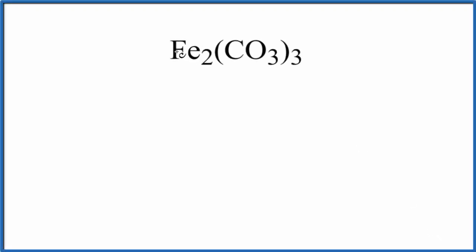In this video we'll figure out the number of atoms for Fe2(CO3)3. This is iron(III) carbonate. When we look at the element symbols we can see we have Fe, let's just write them out.